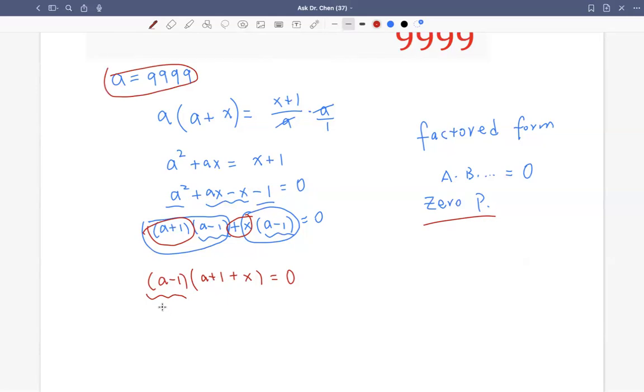So this one won't be 0. So that means that this one has to be 0. So that means a plus 1 plus x has to be 0. Solve for x.